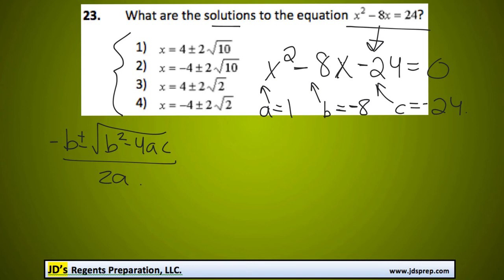So negative b, because b is already negative, it'll be positive 8, plus or minus the square root of negative 8 squared minus 4 times 1 times negative 24, all over 2 times 1.